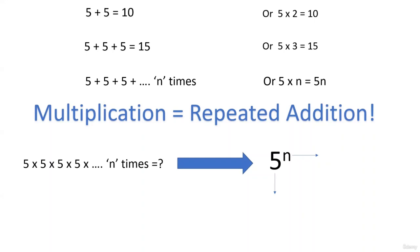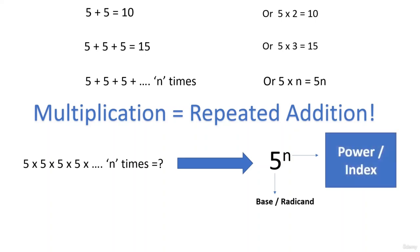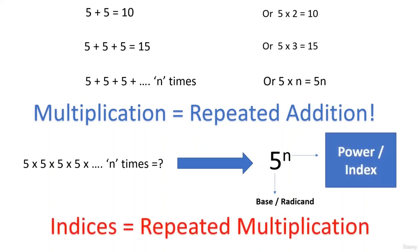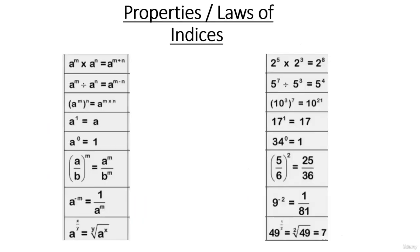Repeated multiplication can be represented in this form. Here we have two parts: the first part, five, is called the base or also the radicand, and n is called the power or the index. So indices mean repeated multiplication — whenever you have an index or a power, you basically mean repeated multiplication. There are certain laws or properties you need to solve questions based on indices.